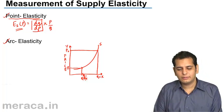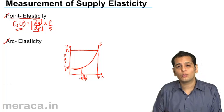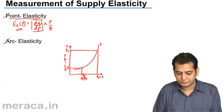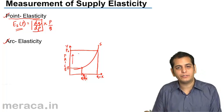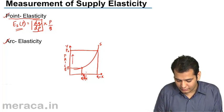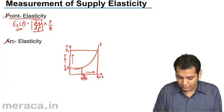P1 is the original price wherein Q1 quantity is being supplied. Now the price rises to P2, and thus the quantity rises to Q2.